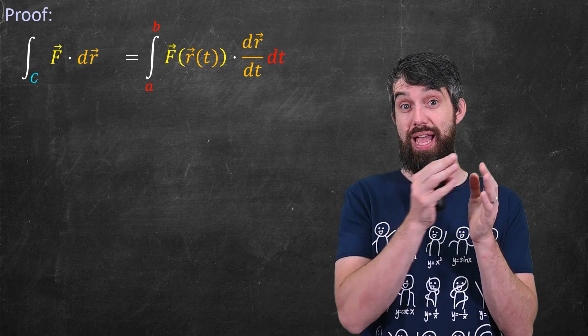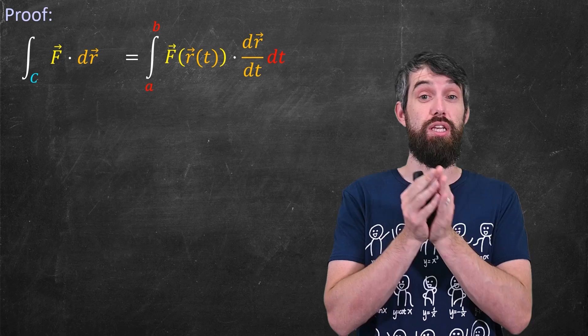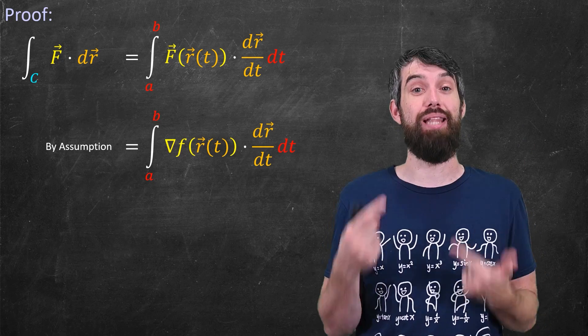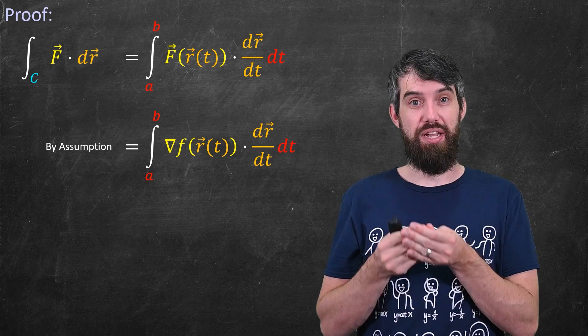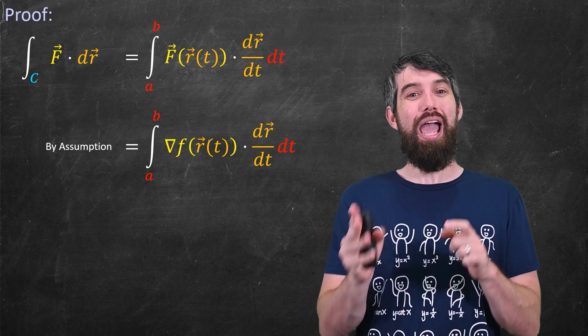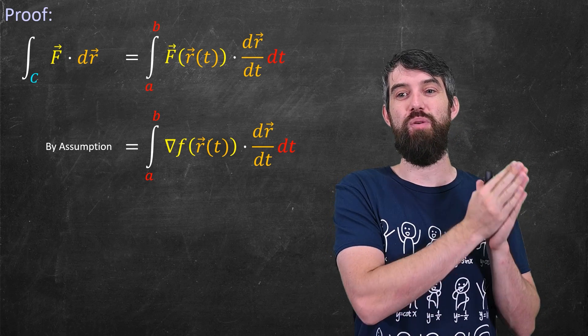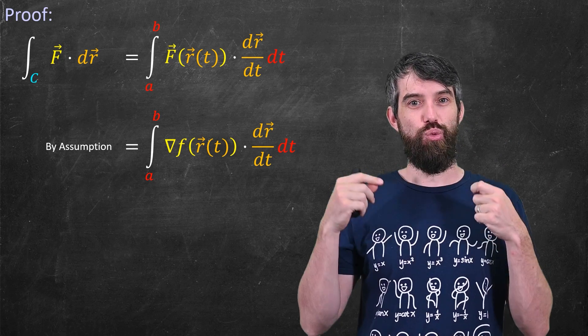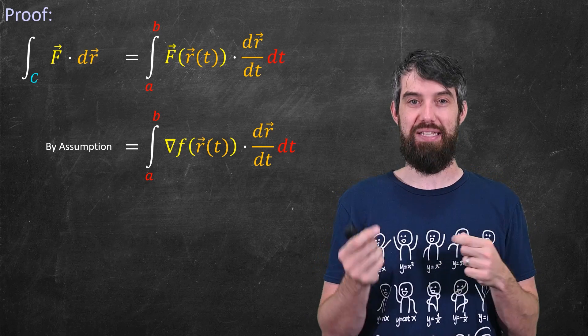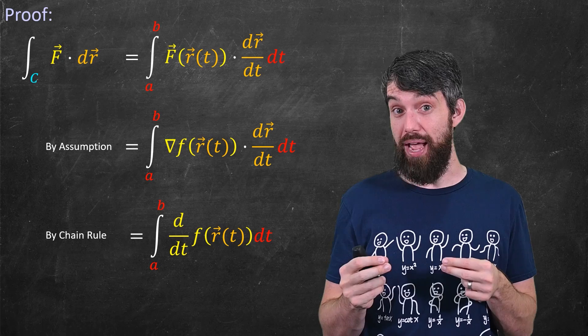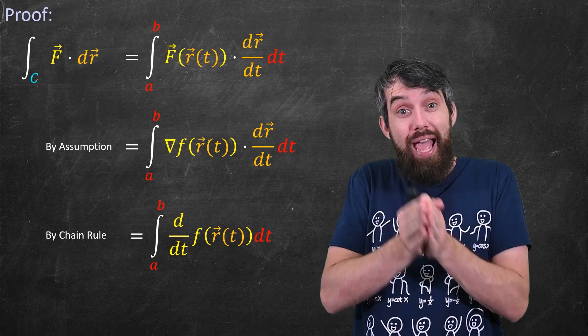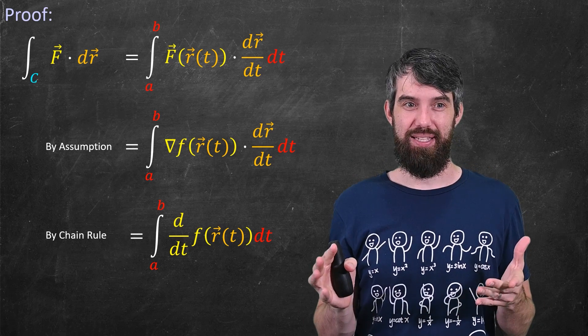Now we have the assumption that capital F can be written as the gradient of lower f and so let's just actually put that in here. I just replace the capital F with the gradient of lower f. Now this we've actually seen way back in multi-variable calculus. I can rearrange this by the chain rule so let me state the answer then we'll investigate it. I claim this integrand is nothing but the derivative of the composition f(r(t)).